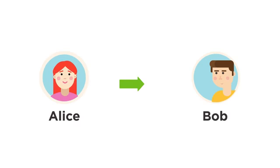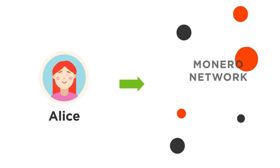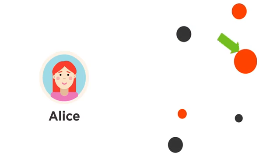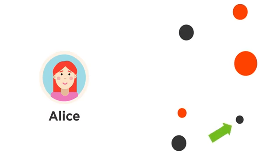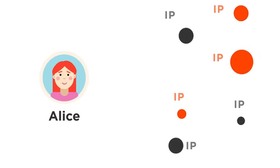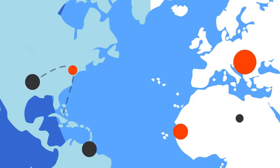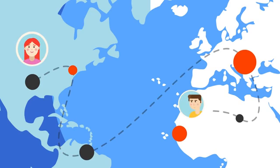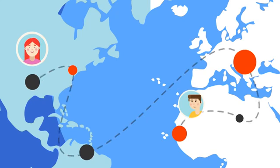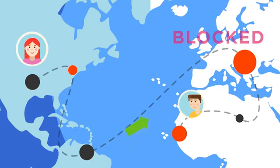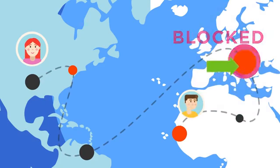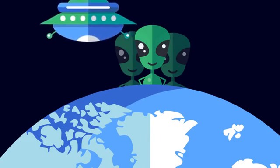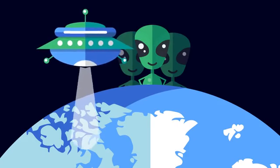Suppose Alice wants to send Monero to Bob. Alice's wallet creates a transaction and then broadcasts it to the Monero network. The Monero network is made up of nodes that communicate with each other by directing messages using IP addresses. This means that it might be possible to geographically trace data as it travels over the open Internet, from start to finish, and everywhere in between. Even though the sender's and recipient's wallet addresses, as well as the amount of Monero sent, remain private, Alice is taking a risk in broadcasting her transaction as some nodes may be logging IP addresses. An adversary with enough resources could attempt to associate transactions with IP addresses to determine from where transactions originate.